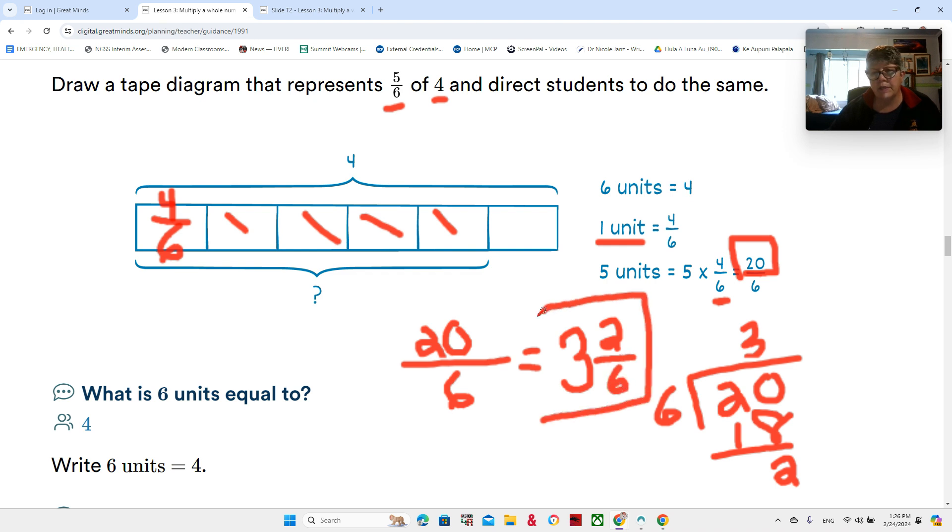Does that make sense that this amount is three and two-sixths? Well yeah, that makes sense because it's less than four but it's almost four. Could we have also, instead of five times four-sixths, could we have also done four-sixths plus four-sixths?